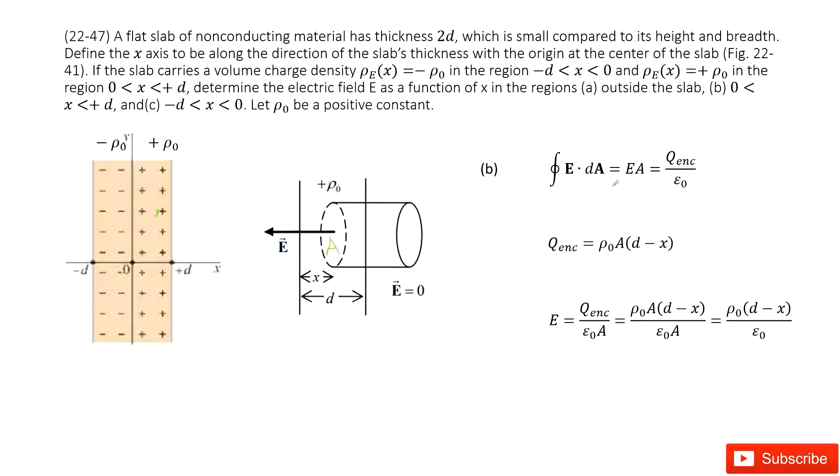So if we write it, the Gaussian surface times the electric field is E times A. This part doesn't have electric field because E equals 0. So E times A equals enclosed charge divided by ε₀. Now we look at the enclosed charge for this region. We use cross-sectional area times the distance.